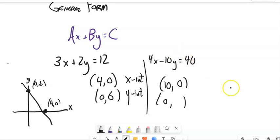I'm going to change this to minus just to mix it up a little bit. Let x be 0. 4 times 0 is 0, so notice now I have negative 10y equals 40. So divide by negative 10, and y must be negative 4.